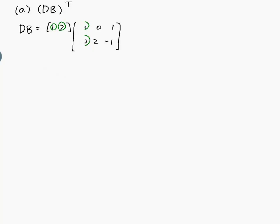The way to do it is this: we get 1 times 4 plus 2 times 0, which would be 4. Then we get 1 times 0 plus 2 times 2, which is 4. And then we get 1 times 1 plus 2 times minus 1, which would be 1 minus 2, which is minus 1. So this is what we get.